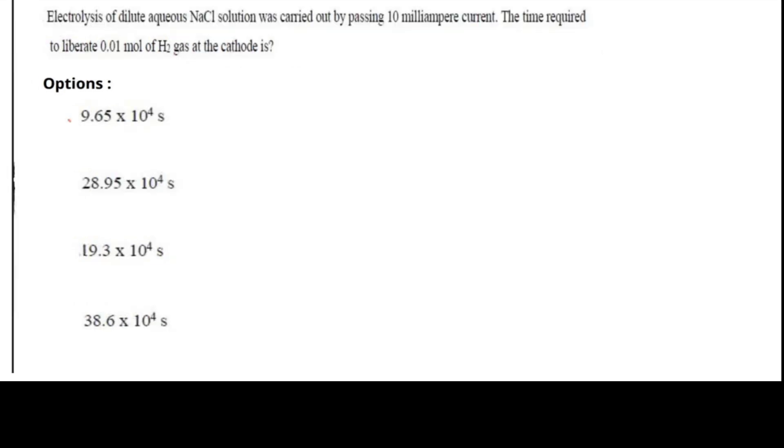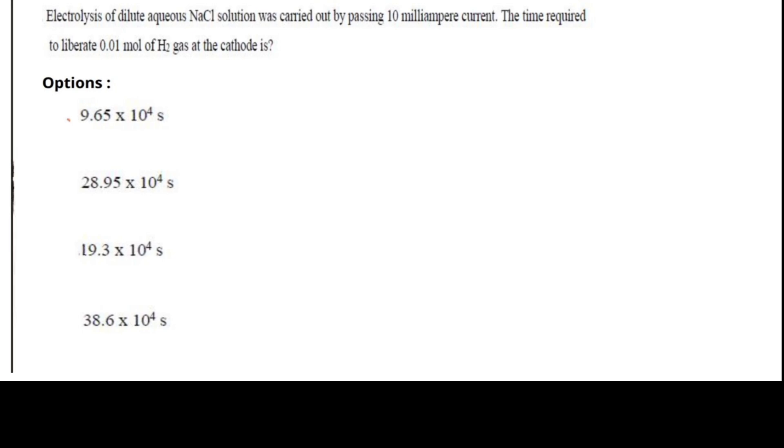Next question: electrolysis of dilute aqueous NaCl solution was carried out by passing 10 milliampere current. The time required to liberate 0.01 mole of H2 gas at the cathodes. The options were 9.65 × 10^4 seconds, 28.95 × 10^4 seconds, 19.3 × 10^4 seconds, 38.6 × 10^4 seconds.